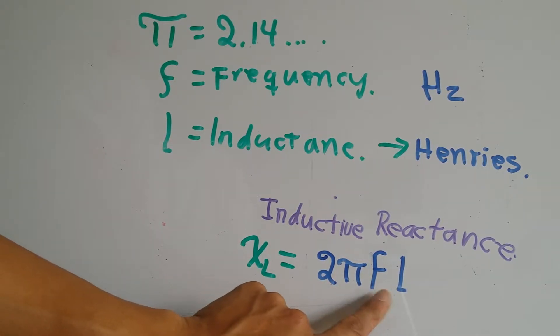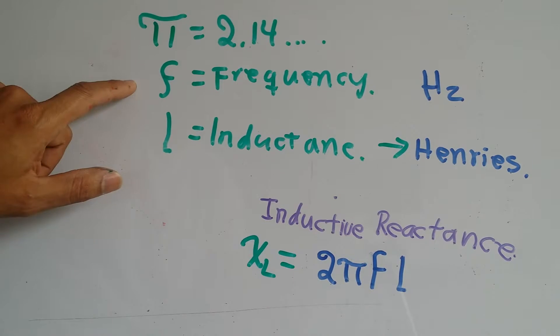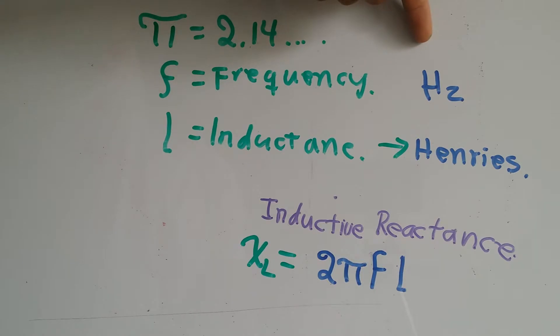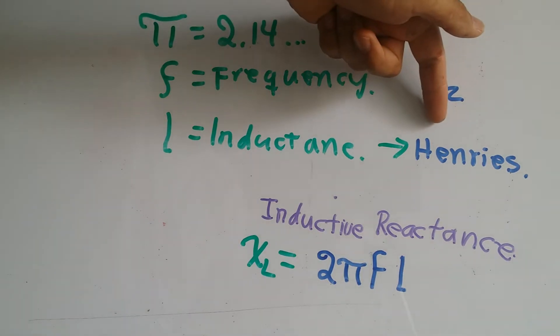It is calculated by the formula 2πfL, where f is frequency and L is the inductance of the conductor. Frequency is measured in Hertz and inductance in Henrys.